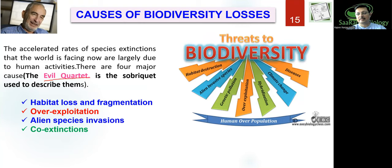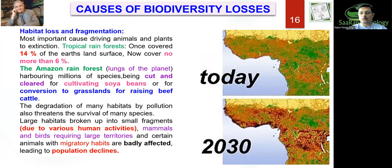The four major causes of loss of biodiversity are called the Evil Quartet. These are: habitat loss and fragmentation, over-exploitation, alien species invasion, and co-extinction. Let's examine each one.